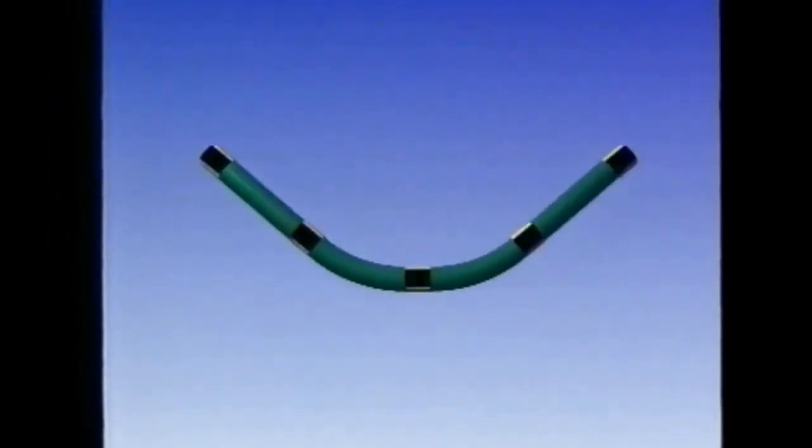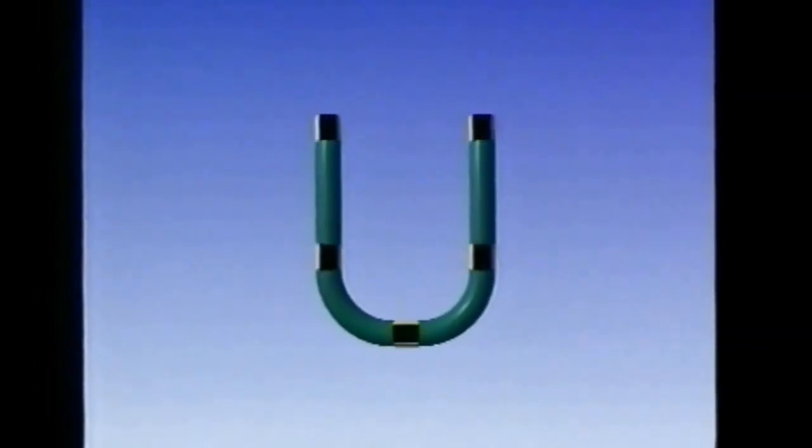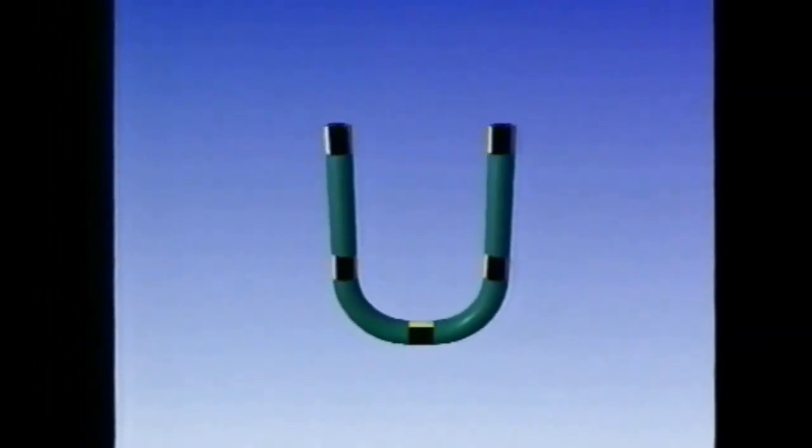If the tube is flexible enough to form a U, then it can still be rotated, but when the ends are brought together, notice that they're actually rotating in opposite directions.